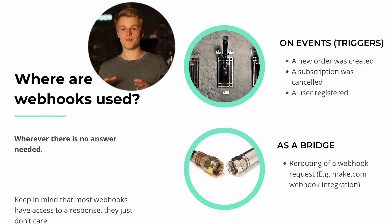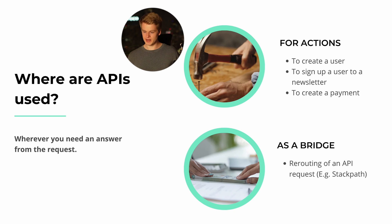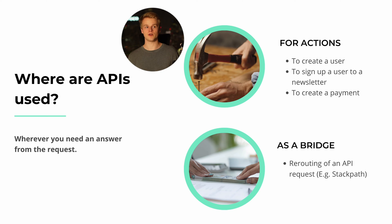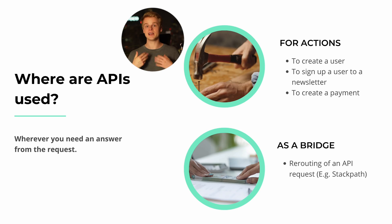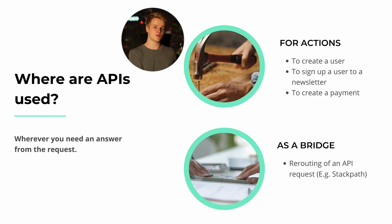On the API side, you can define anything as an API as long as you do something with a request or expect a specific response. APIs are used for actions — creating users, signing someone up for a newsletter, or creating a payment. The response is needed because, for example, when you create a user, the receiver returns an ID, which you need to run other actions afterward — like updating that user ID in a different database or sending specific information to them.